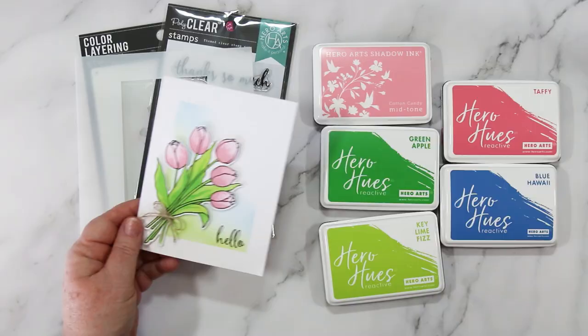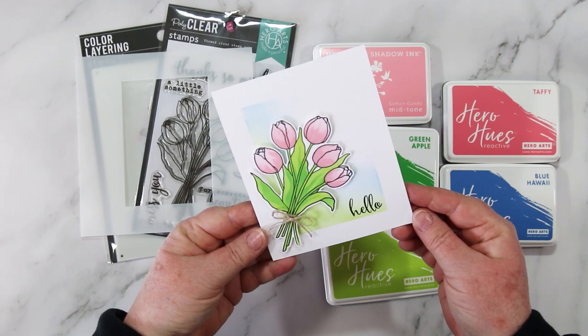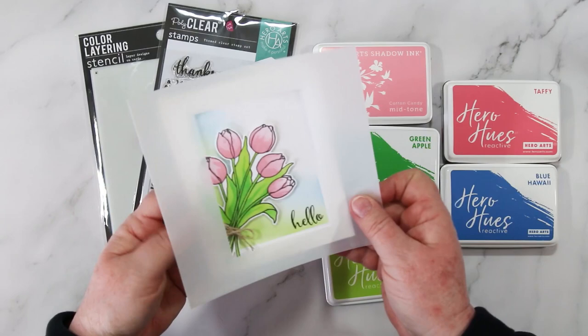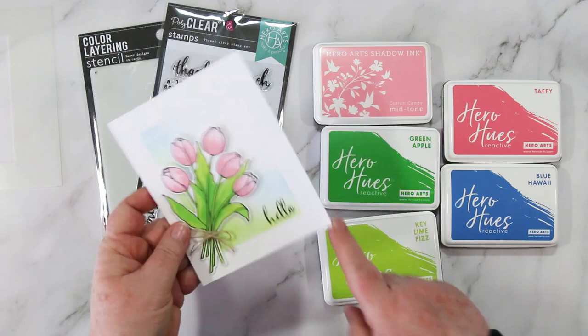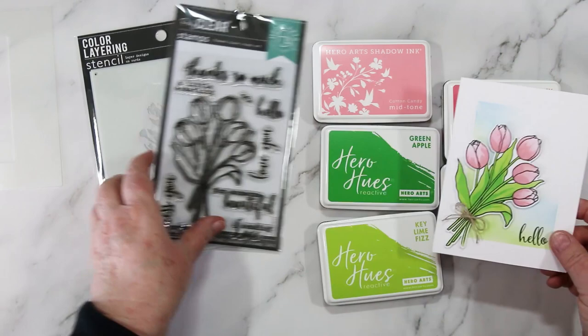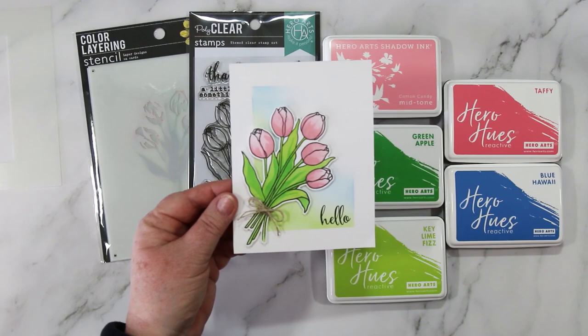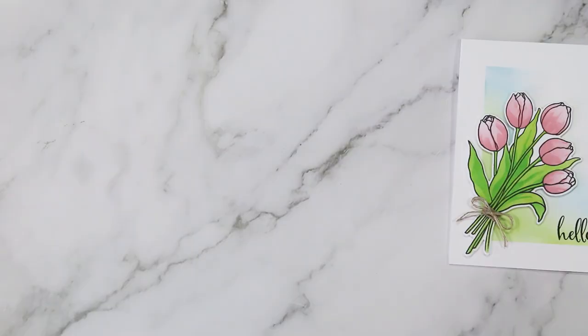This is a really quick and easy card. I used an A2 mask for the background and then the ink blending brush and a green and blue - blue Hawaii and green key lime fizz is what I used actually - and did that before adding the art piece to the front. To add a little bit of detail I wrapped the stems with a little bit of jute.